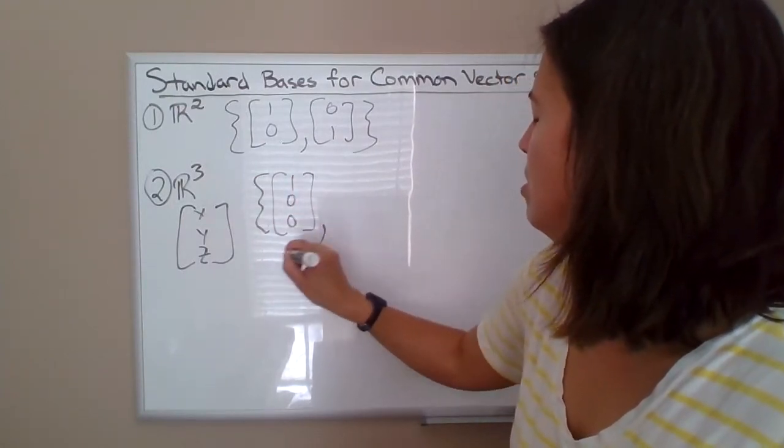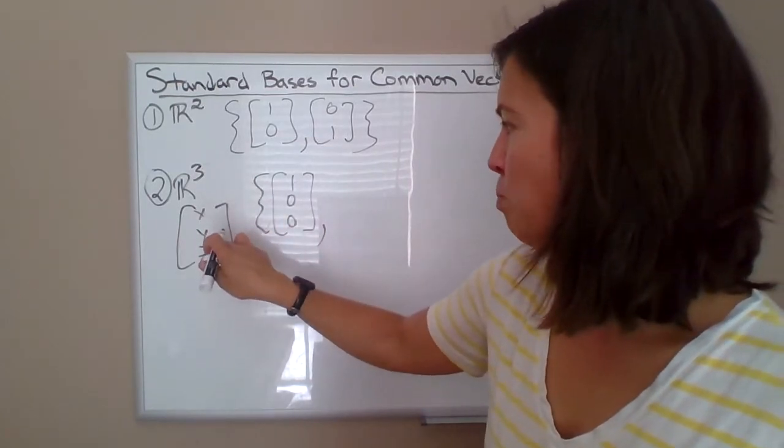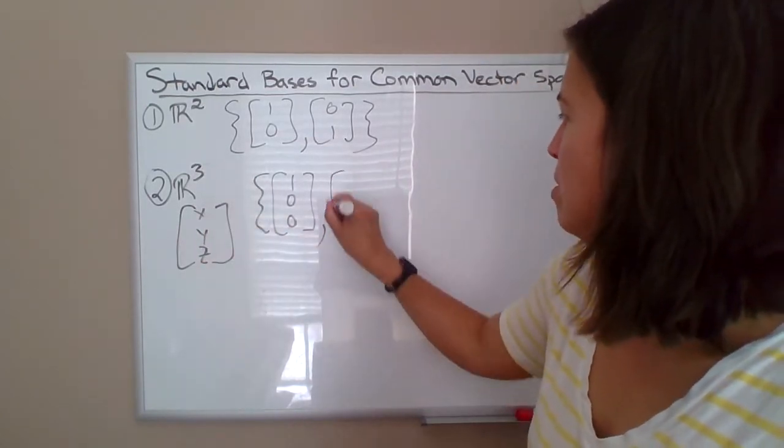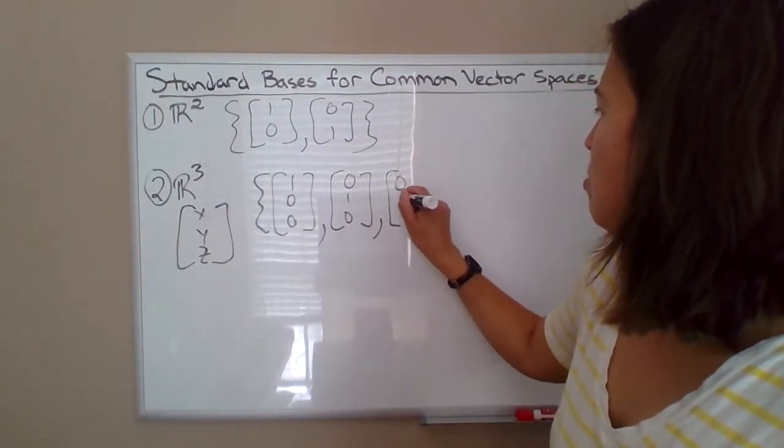So we could break that down the same way and generate this standard basis: 1,0,0, because we would do X times 1,0,0, and then plus Y times 0,1,0, plus Z times 0,0,1.